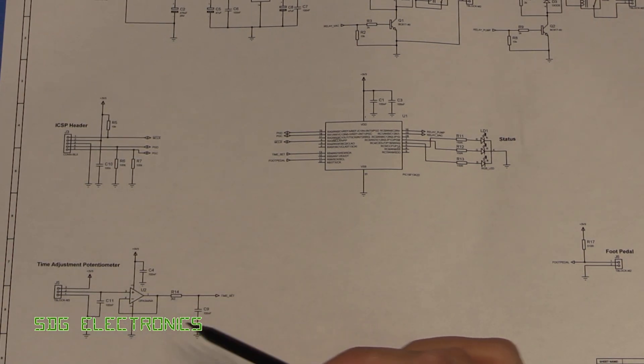And then we've just got a little bit of analog electronics here. So this is basically just a buffer and a filter and that takes in the input from a potentiometer that's on the front of the device and that sets how long it is before the pump turns off after releasing the foot pedal.